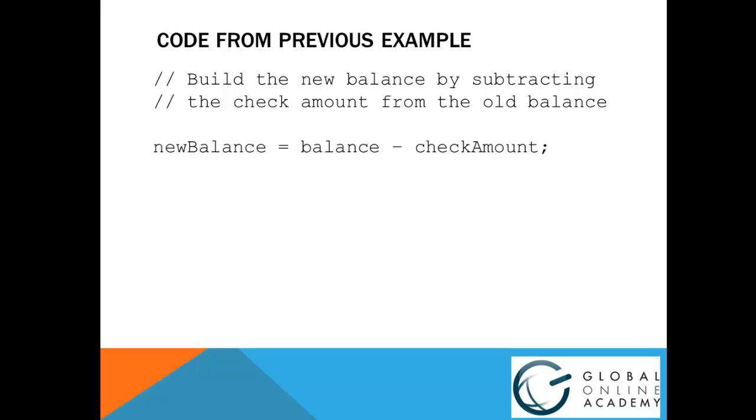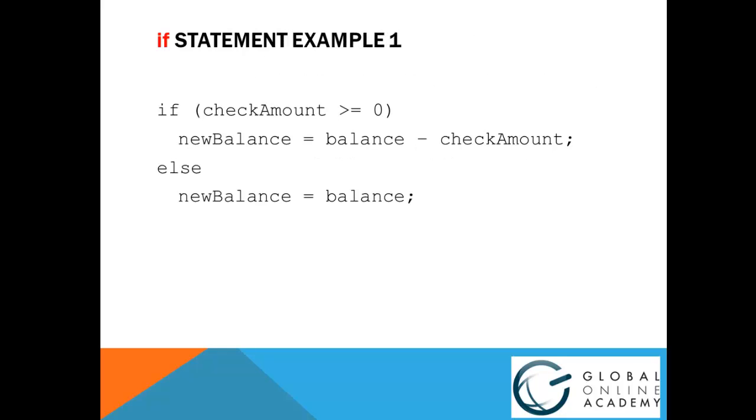Take a look at this snippet of code from one of our previous lessons. We have a statement that computes a new balance by subtracting the check amount from the current balance. But is that always what we want? Suppose someone tries to write a check for more money than they have in their account. In that case, we don't want to subtract the check amount from the balance.